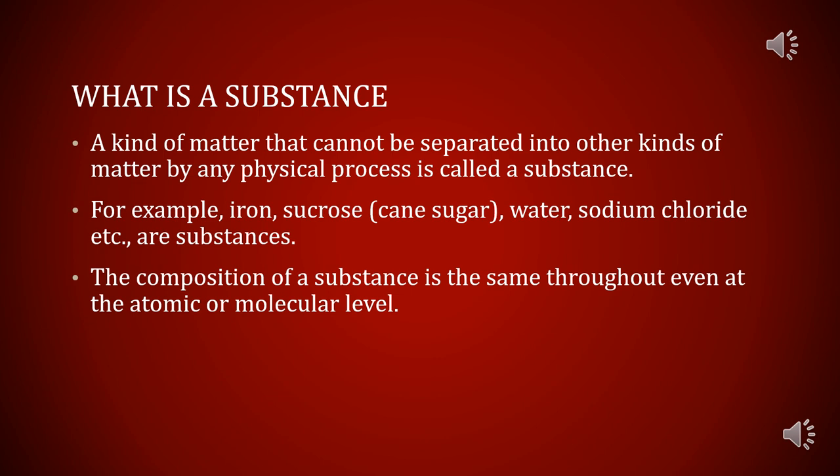When a scientist says that something is pure, it means that all the constituent particles of that substance are the same in their chemical nature. A block of iron is a substance; sodium chloride (common salt) is a substance. A pure substance consists of a single type of particle — in other words, a substance is a pure single form of matter.